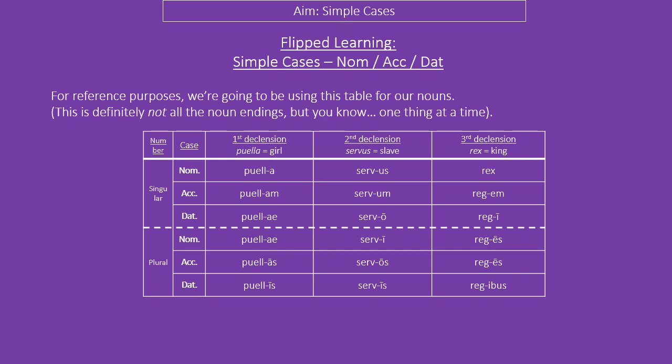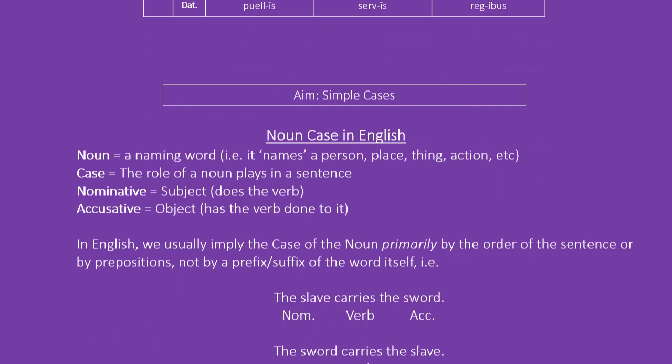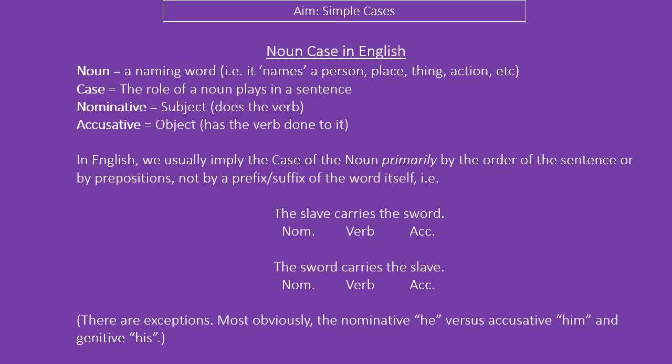If you are beyond this, you will know that there are more endings than this. So, how does noun case work in English? Nouns are naming words — they name persons, places, things, objects, etc. The case is the role that that noun plays in a sentence. Nominative is the subject, i.e. it does something, and accusative is the object, i.e. something happens to it.